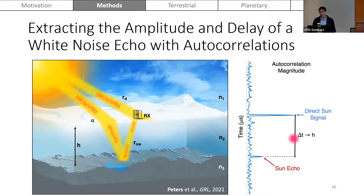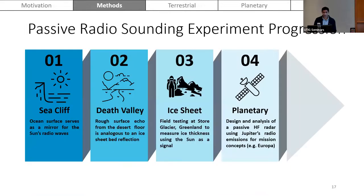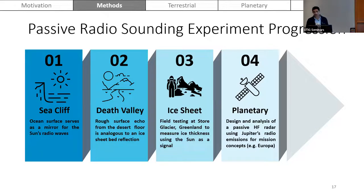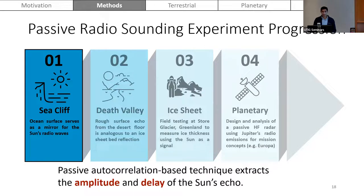Using the relative amplitude between the direct sun signal and the sun echo, you can estimate attenuation or reflected power losses from inside the ice sheet. The experimental progression goes from a sea cliff where the ocean acts as a mirror for the sun's radio waves, to a Death Valley experiment where a rougher surface echo is more analogous to an ice sheet bed reflection, then to an ice sheet where I'll show field testing at Stoyer Glacier. Finally, I'll discuss implications for planetary sounding and propose a passive HF radar that uses Jupiter's radio emissions for mission concepts such as studying Europa's icy shell.